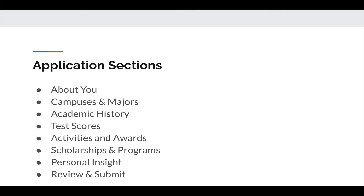The application is split into different sections: there's an About You section, a Campus and Major section, an Academic History section, Test Scores, Activities and Awards, Scholarship and Program Information, Personal Insight Questions, and then the final step is to review the application and submit it.